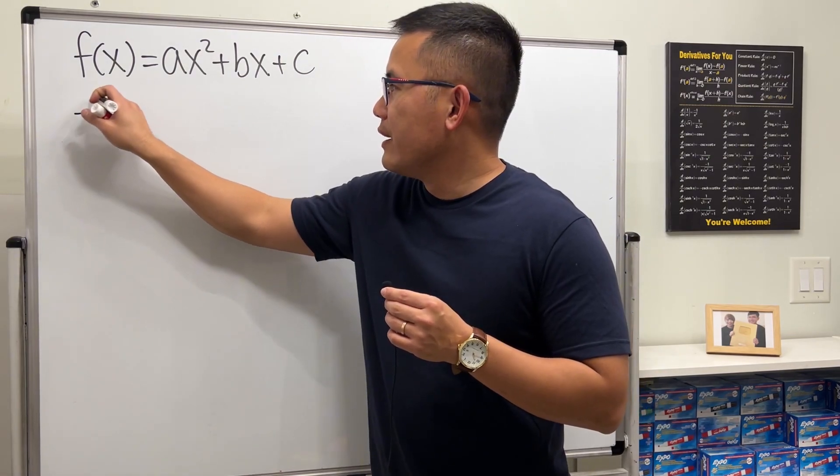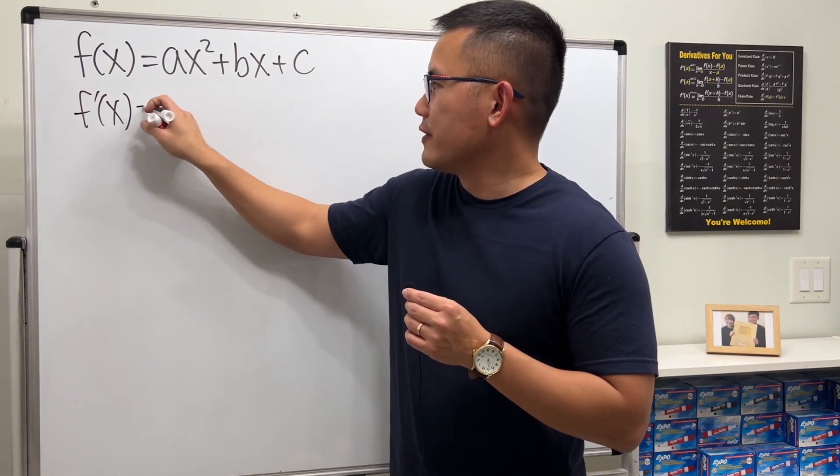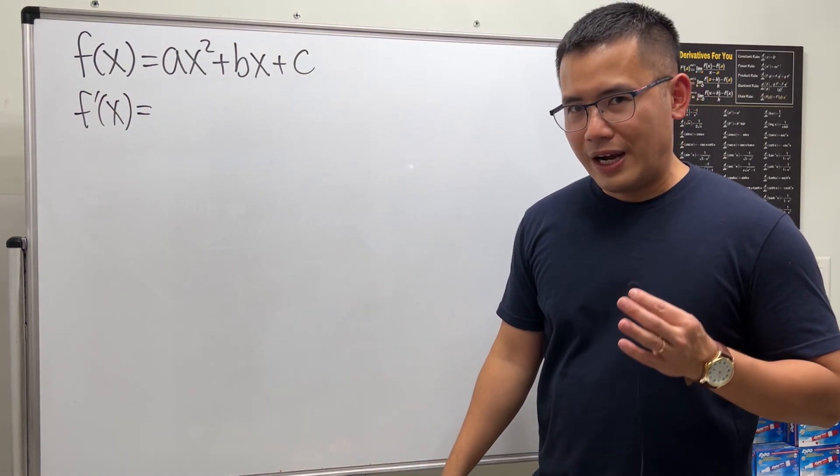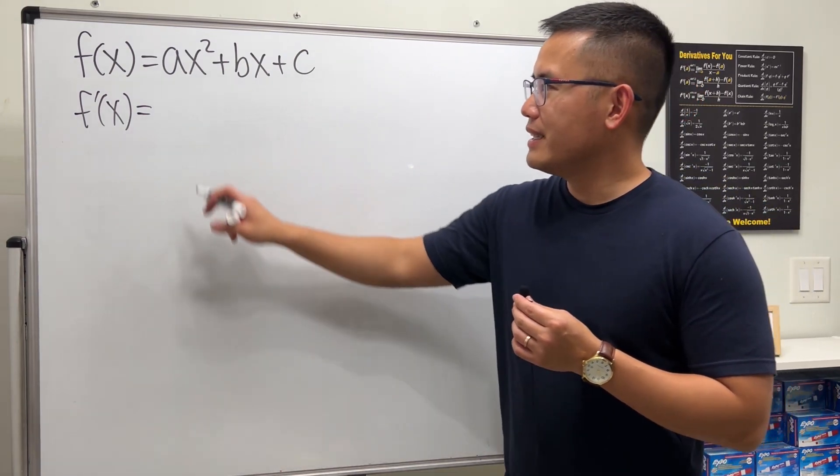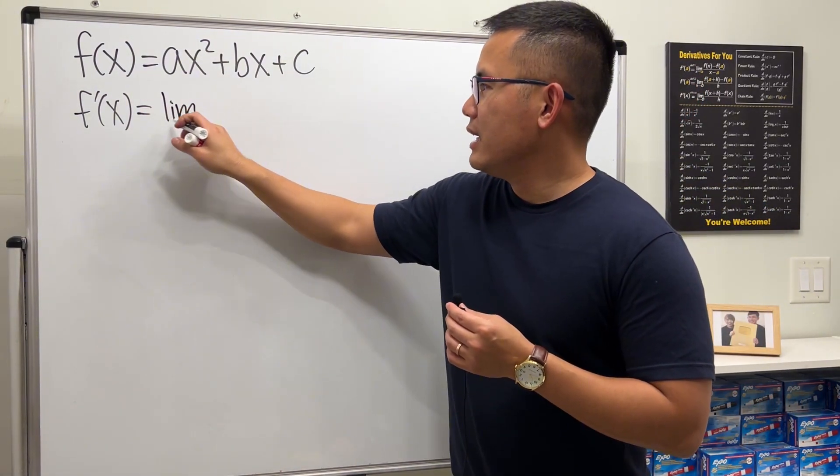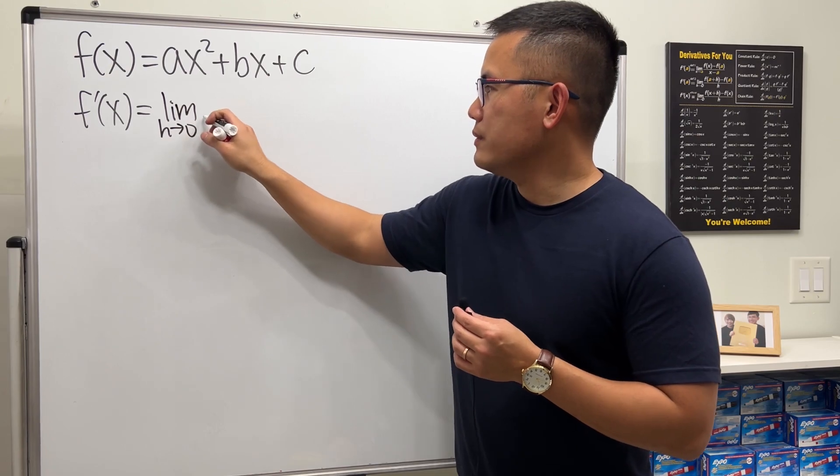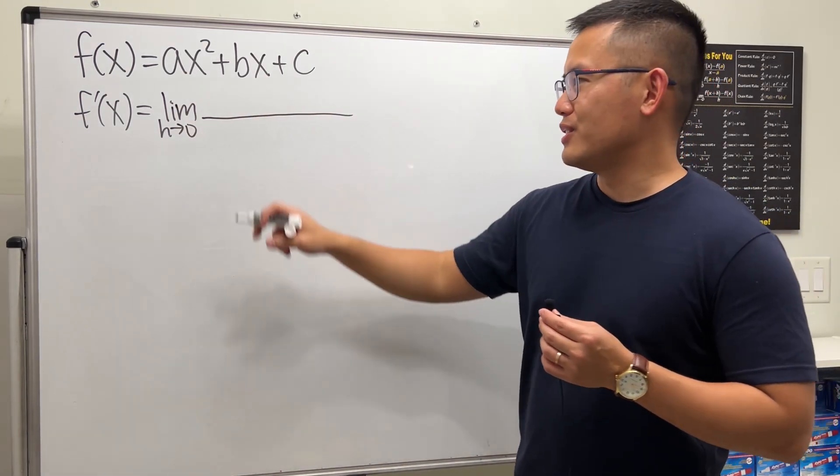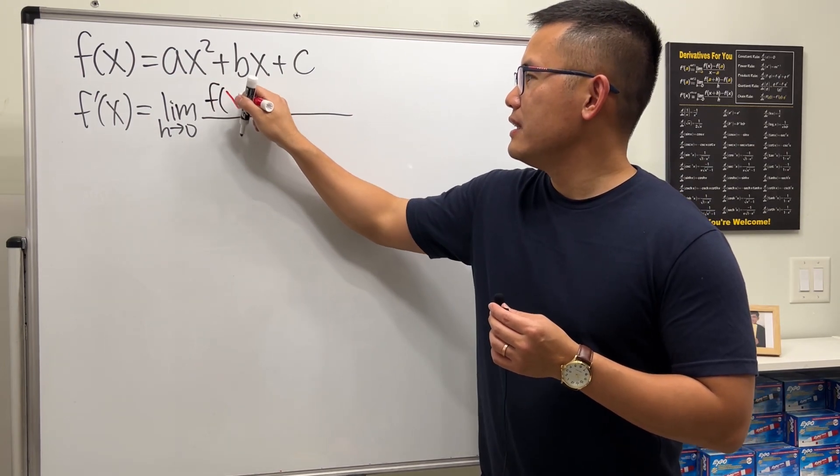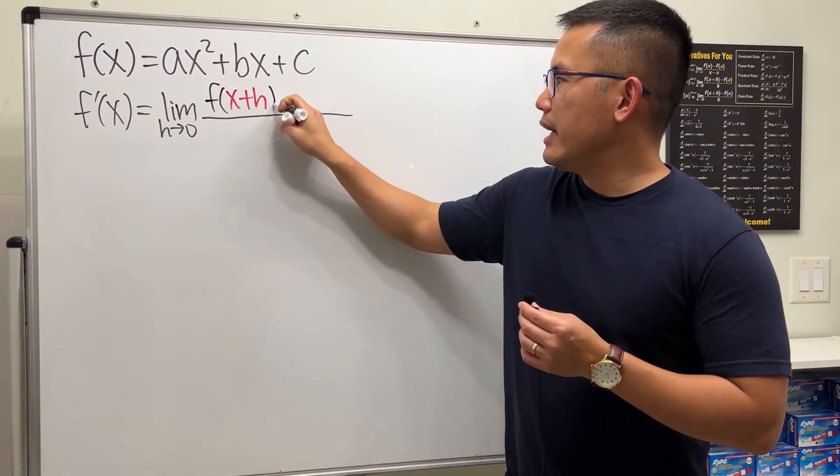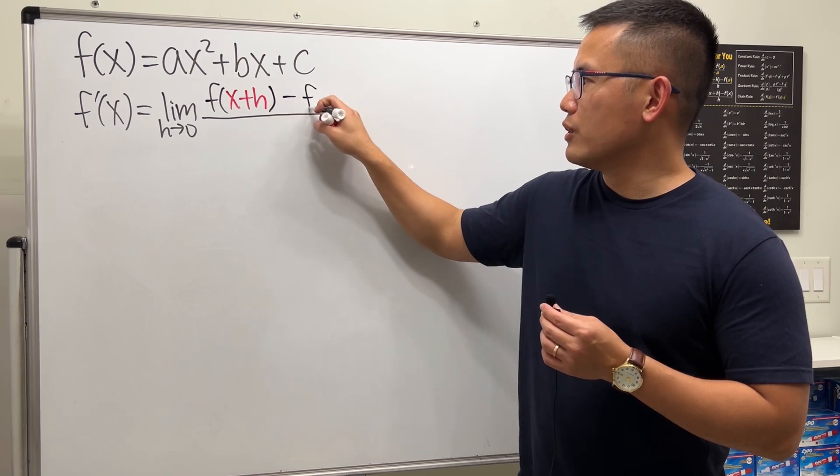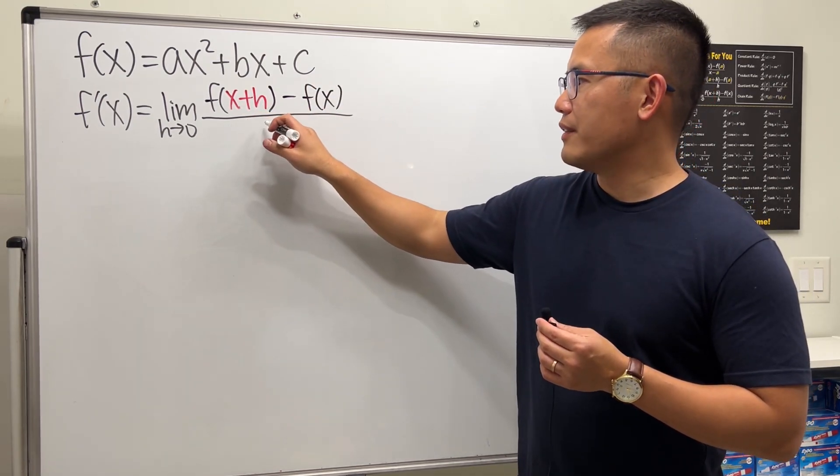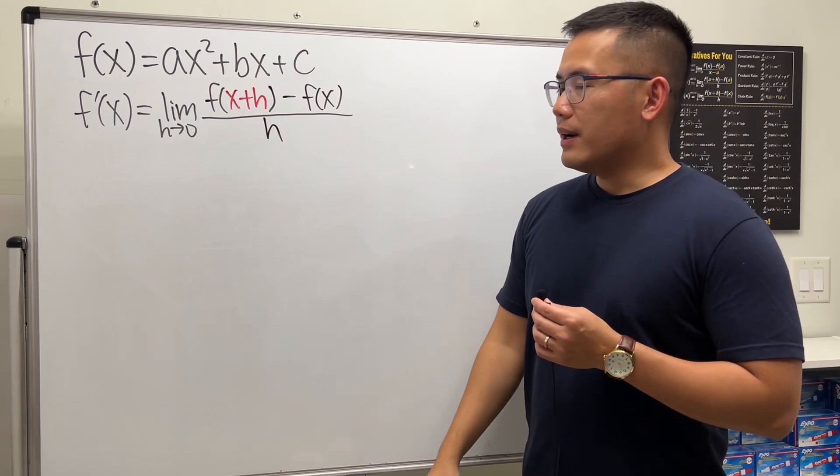So let's see what we have. Firstly, we will have f prime of x. And secondly, you have to remember the definition of the derivative. That's of course the limit as h approaching 0. On the top, what do we have? f of x plus h, and then minus the original function f of x. And on the bottom, we just have an h.